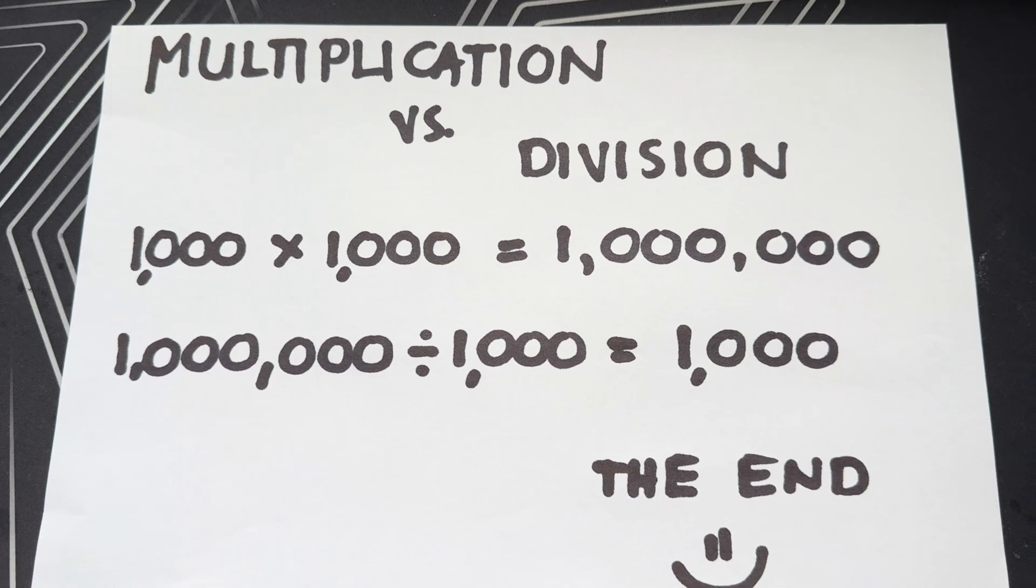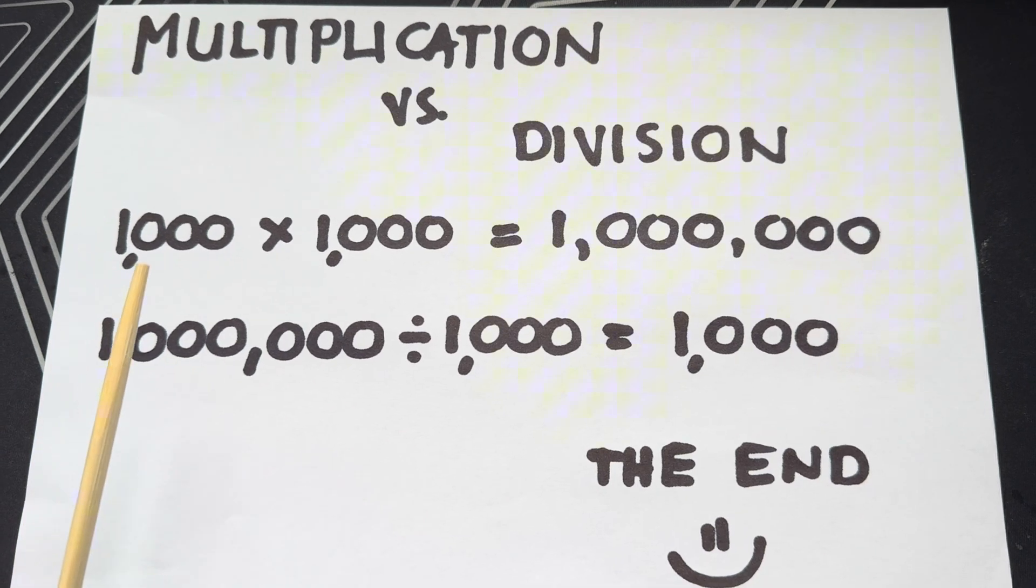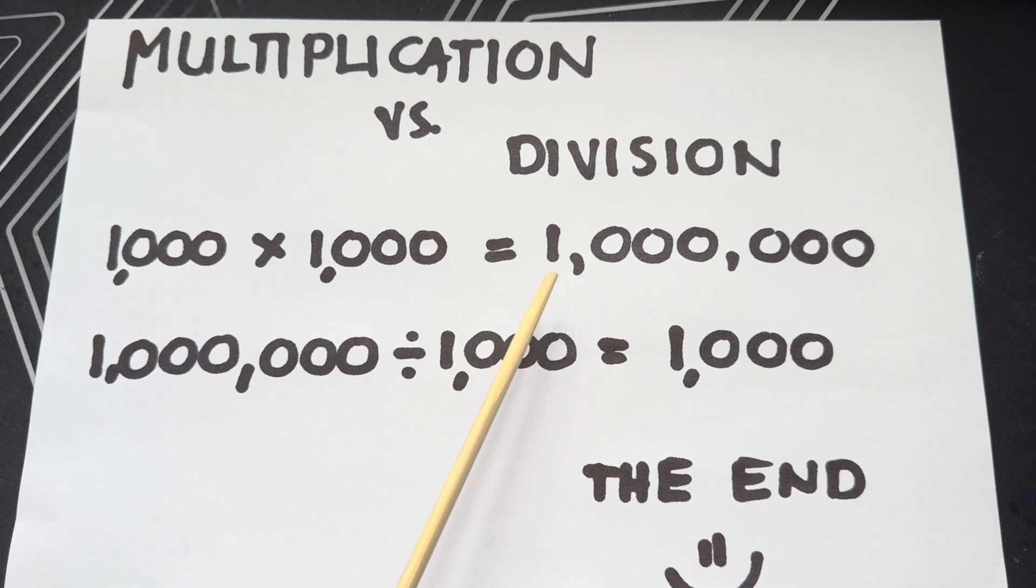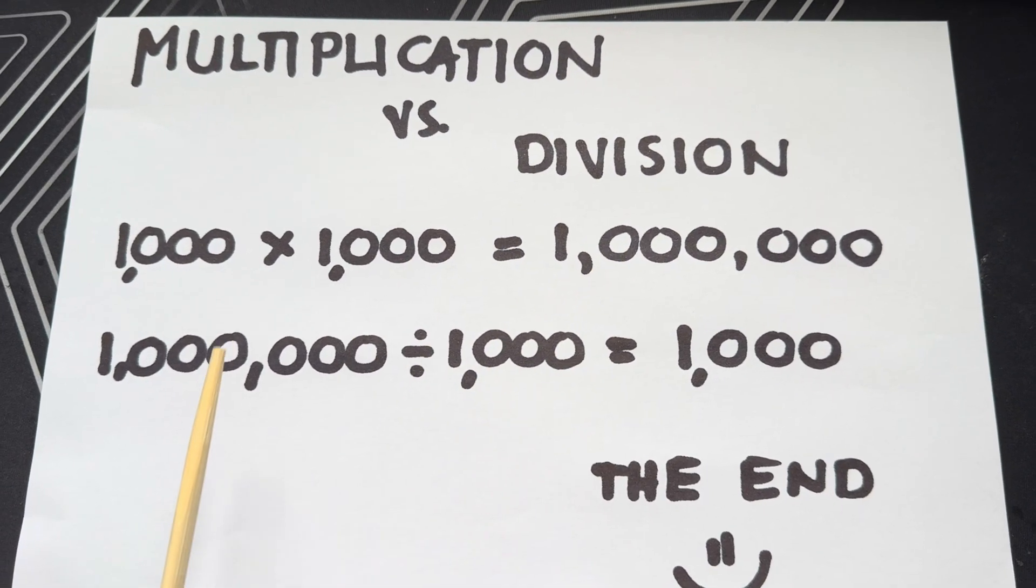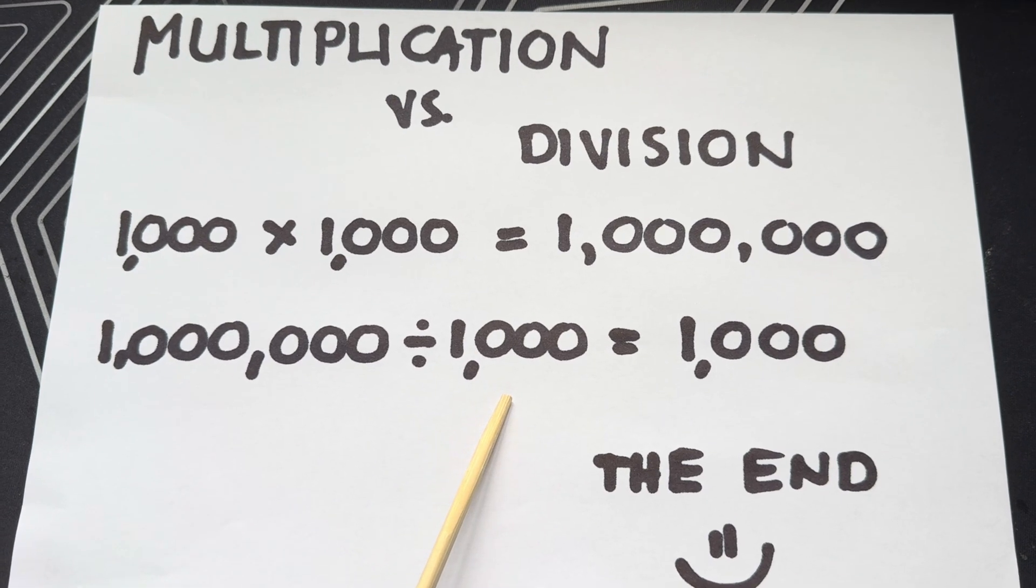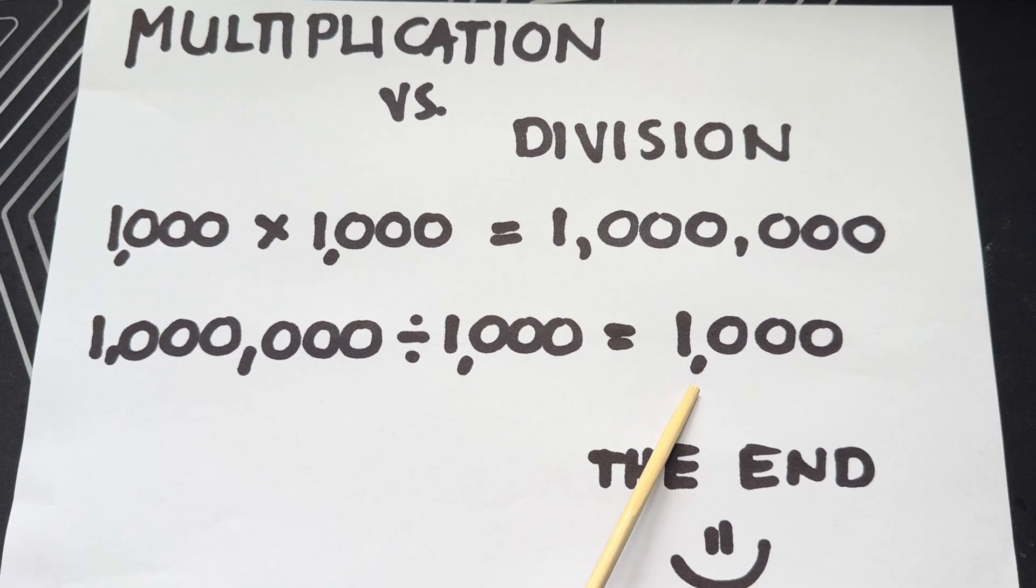And lastly, let's try to do big numbers. 1,000 times 1,000 is equals to 1,000,000. 1,000,000 divided by 1,000 is equals to 1,000.